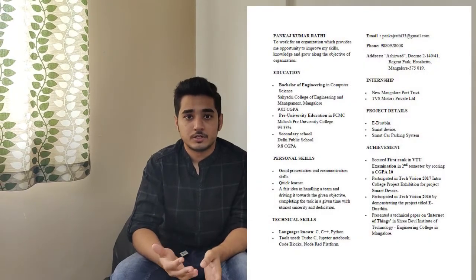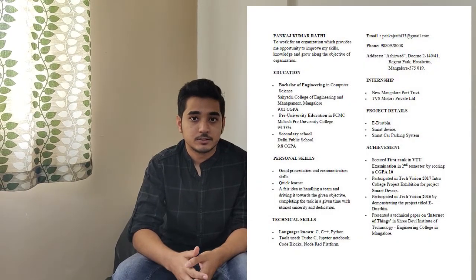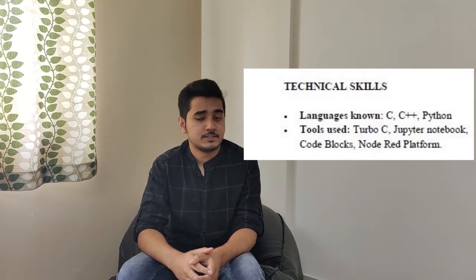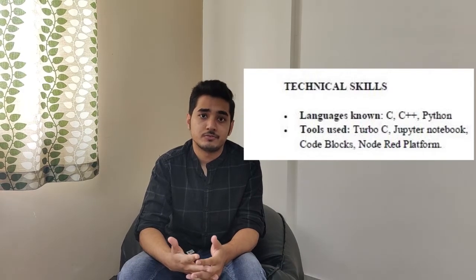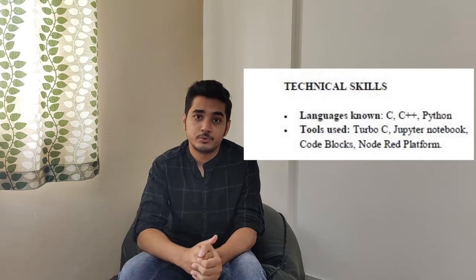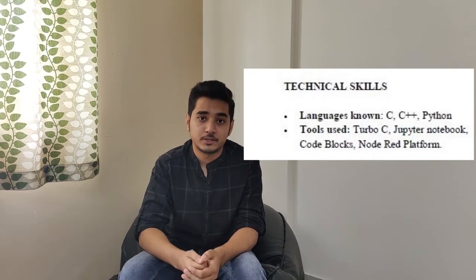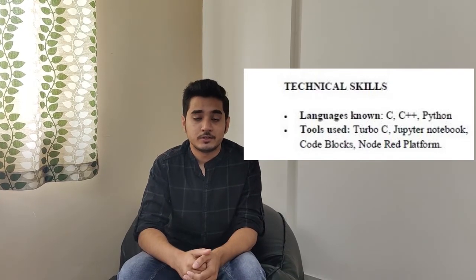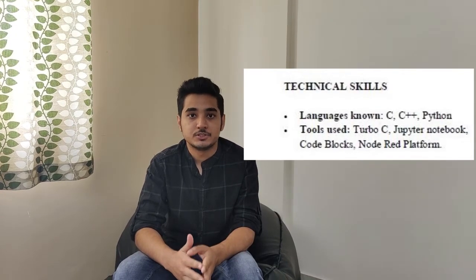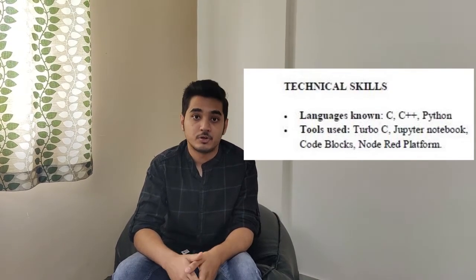The fifth section covers technical skills. For a CS student, this will be the languages known — such as C, C++, Python — as well as tools used, like Jupyter Notebook or Visual Studio Code. For a mechanical student it might be MATLAB software; for a civil student it might be AutoCAD, and so on.